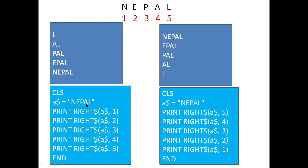So I write Right$(a$, 2) — from the right side two characters, that is L and A, so AL will be printed. Then Right$(a$, 3) — from the right-hand side three characters: P, A, L — so PAL will be printed. Next, Right$(a$, 4) gives EPAL, because from the right-hand side one, two, three, four. And finally Right$(a$, 5) gives NEPAL at the last, so the full string NEPAL will be printed.